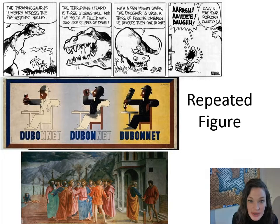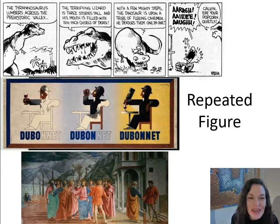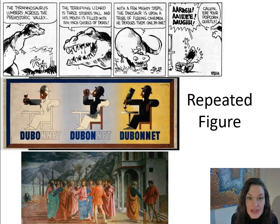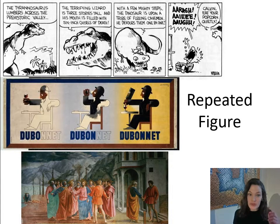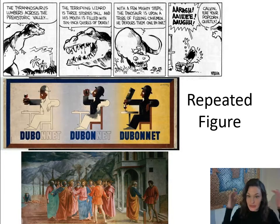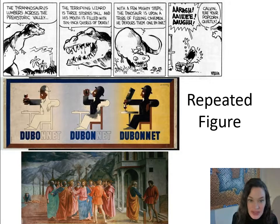The Dubonnet ad shows the gentleman becoming more fully colored as he drinks the wine — he starts as a line drawing and then becomes himself. Very similar left-to-right reading as Calvin and Hobbes, just without divisions. The bottom is a Masaccio artwork from the early Renaissance in Italy — a narrative that doesn't go from left to right. At the time many people were illiterate, and if you haven't learned to read, you might not naturally order things left to right.